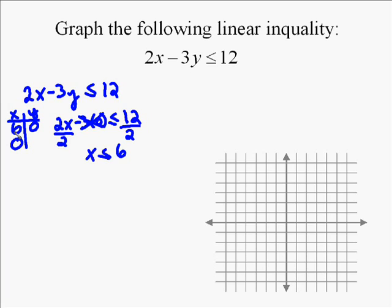For the y intercept, we put 0 in for x. When we do this, 2 times 0 equals 0. So we're left with—and be careful—notice the negative in front of the 3. It's negative 3y. So when you divide, you have to divide by negative 3.